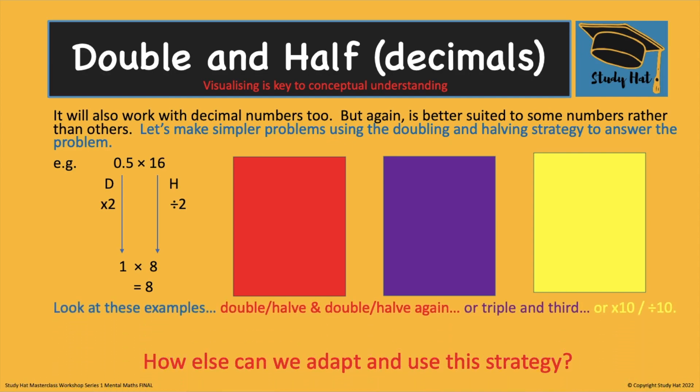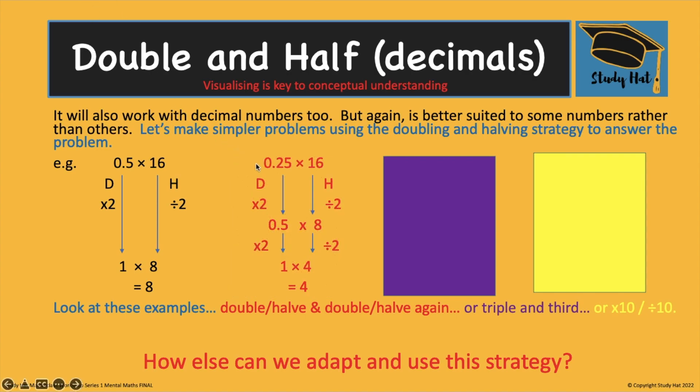How can we adapt this? How can we do the strategy to our advantage in other ways? Well recognizing the 0.25 again. Doubling. Doubling again gives me to the 1. 0.25 times 2. 0.5 times 2. I've now got my whole number. Because I've doubled twice on this factor I would have to half twice on this factor. 16 divided by 2 is 8. 8 divided by 2 is 4. I'm left with my answer. Super simple.